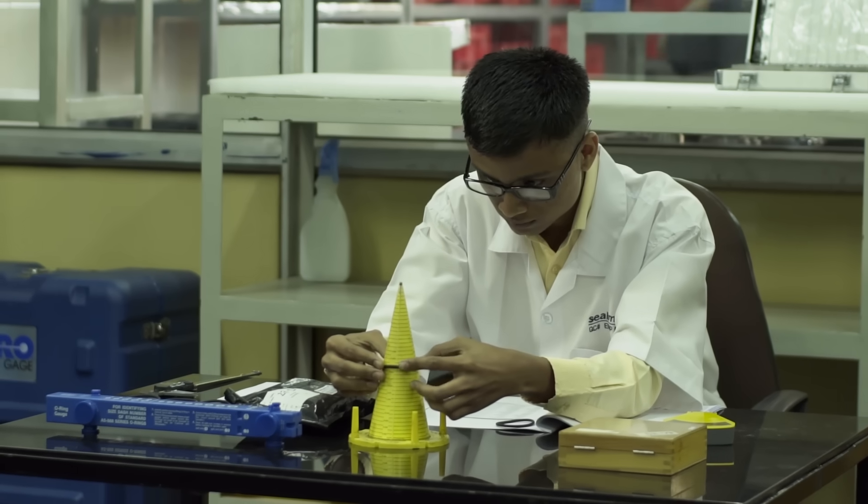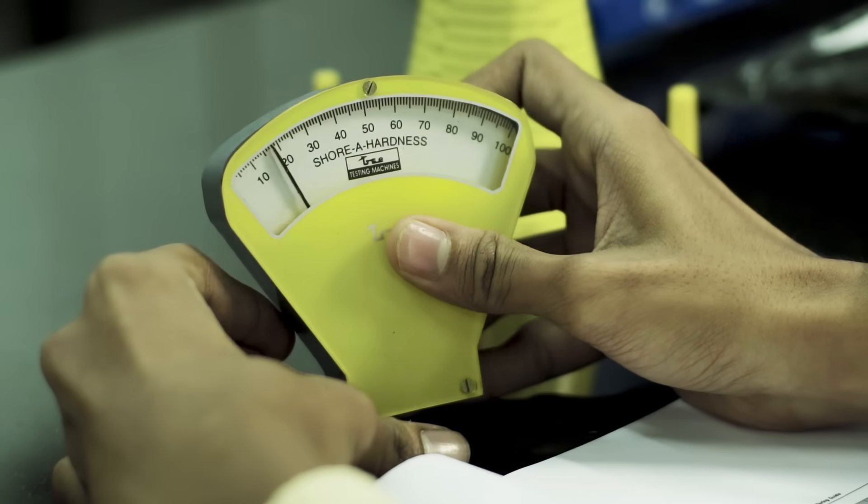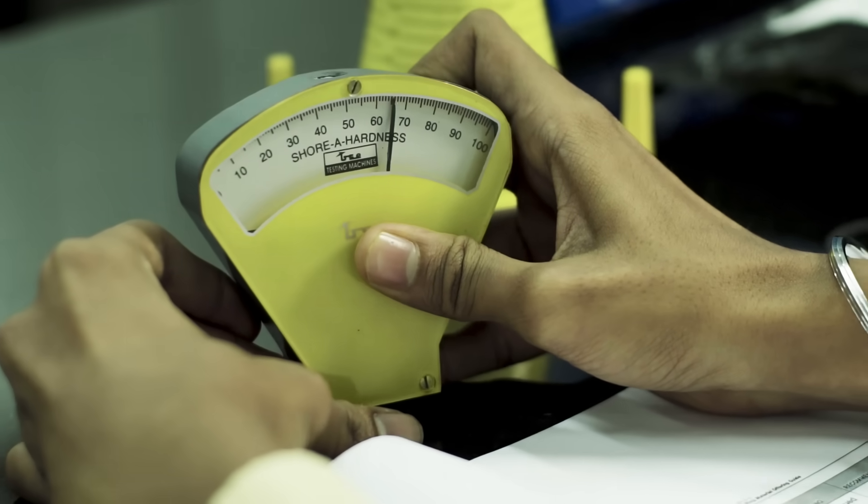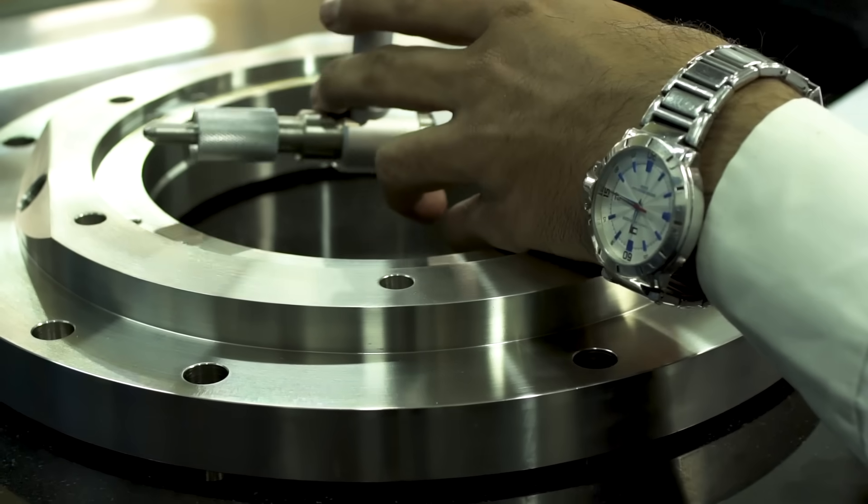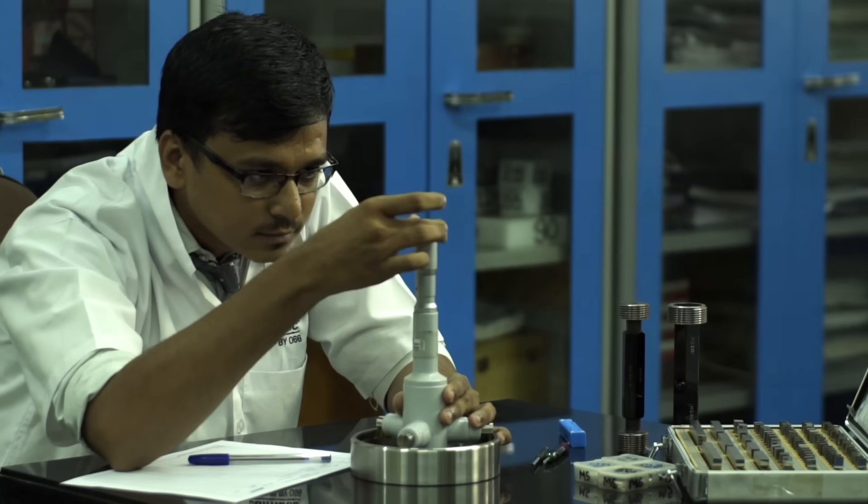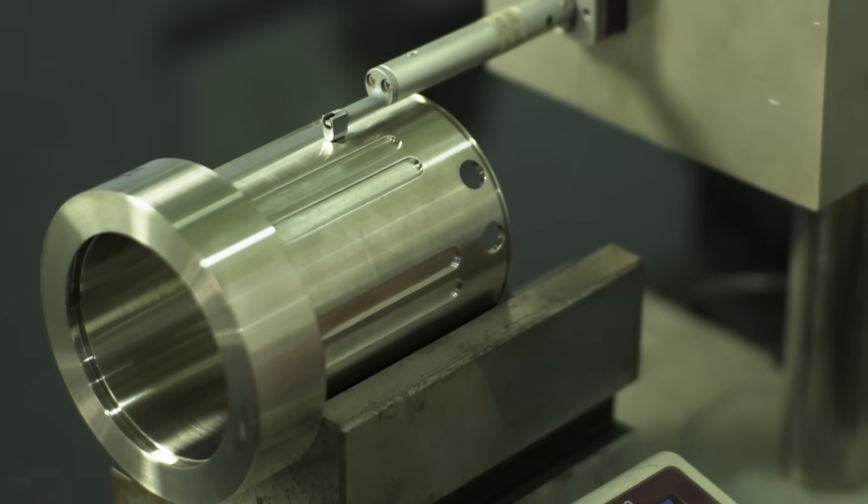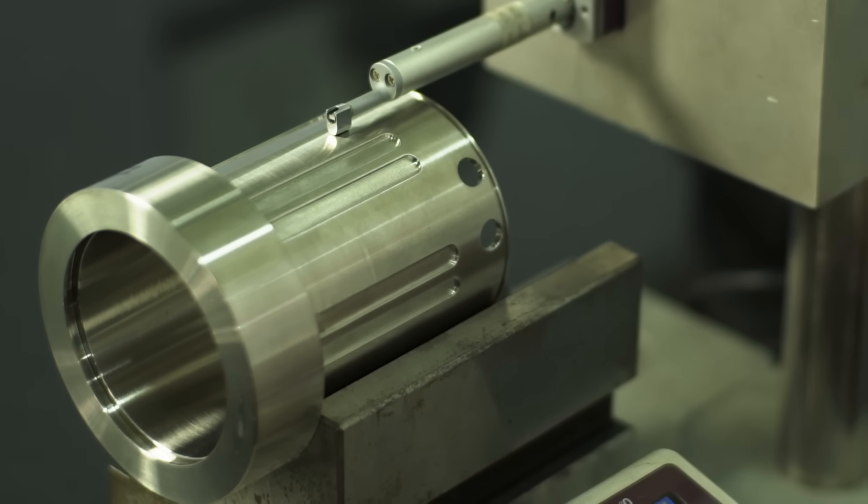Robust designs are our constant pursuit. After production, a very precise, rigorous and accurate quality check takes place. At SealMatic, devices that can measure tolerances up to 2 microns are installed to ensure the quality of our seal is not compromised.